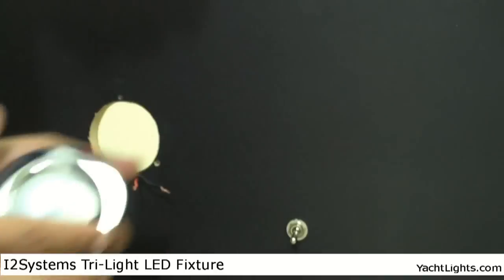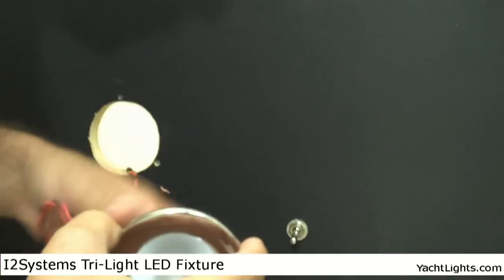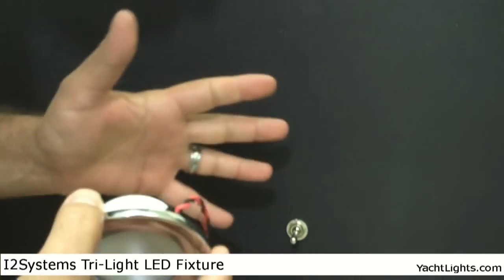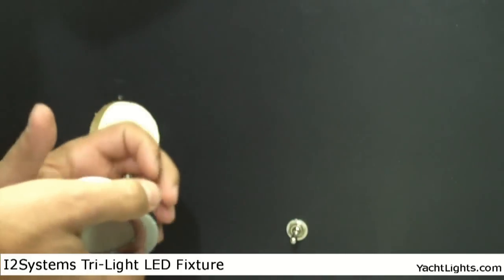So you can turn white, blue, or red, and that's done by just using two wires—positive, negative—using a regular on-off switch, so you don't have to get any fancy switches or controllers.